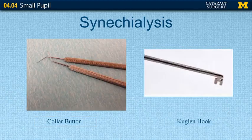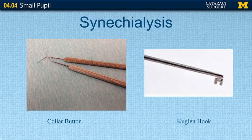Other mechanisms include using a collar button or a Kuglin hook. In both cases, you find an area where the iris tissue is not adherent and mechanically stretch the pupil to break the adhesions.